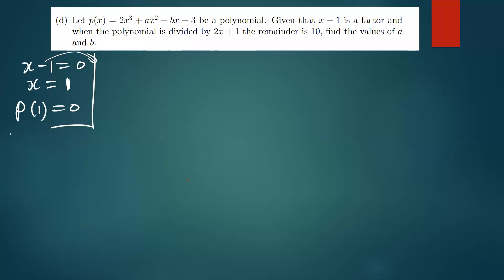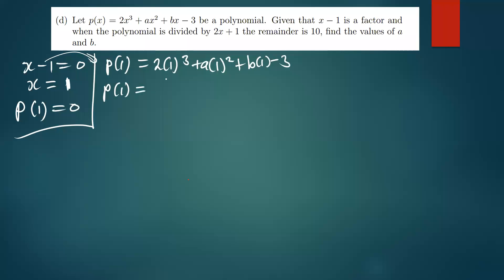To find p(1), we replace x with 1 in the expression. So p(1) = 2(1)³ + a(1)² + b(1) - 3. Simplifying: 2 times 1 is 2, 1 squared times a is a, and b times 1 is b. So p(1) = 2 + a + b - 3. Since x - 1 is a factor, this equals zero.